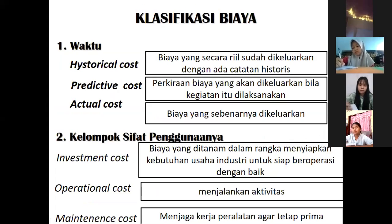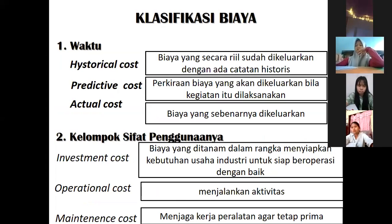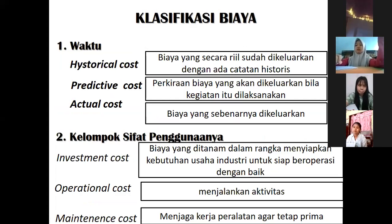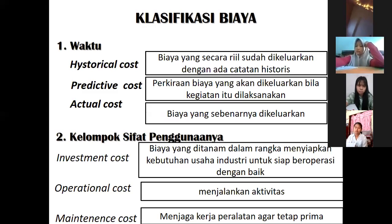Ada klasifikasi biaya, ini cuma perbedaan-perbedaan aja. Kalau dari waktu, ada historical cost itu biaya masa lampau baru kita catat. Kalau predictive cost itu kita memprediksi biayanya yang dikeluarkan untuk kegiatan. Kayak kalian bikin proposal kegiatan itu, itu kan predictive cost. Misalnya kalau kalian mau bikin acara, ngajukan proposal, kalian prediksi biaya-biayanya apa aja. Baru actual cost itu biaya yang sebenarnya dikeluarkan.